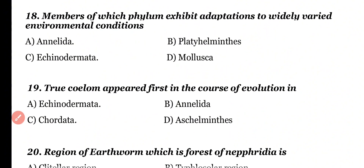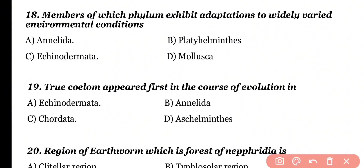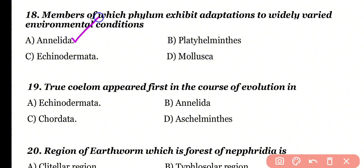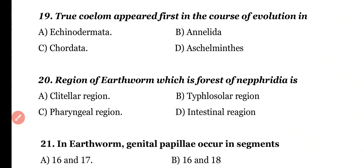Question number 18. Members of which phylum exhibit adaptation to widely varied environmental conditions? Annelida, Platyhelminthes, Echinodermata, or Mollusca. Correct answer is option A. Annelids have maximum ability to adapt to variable environmental conditions.